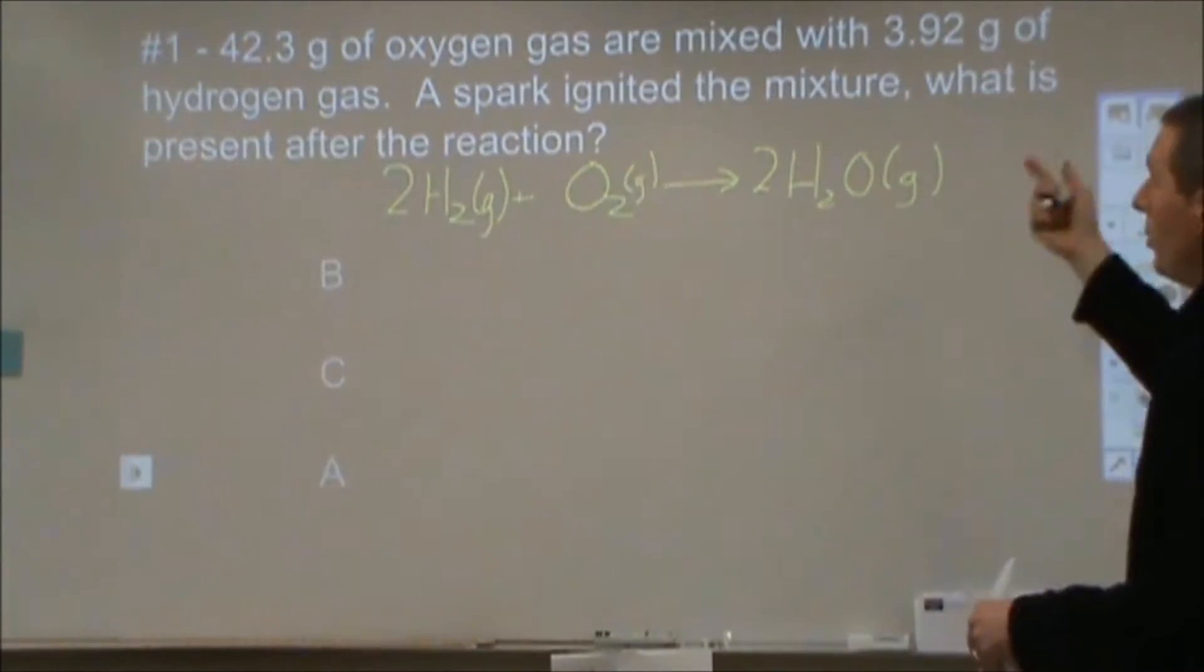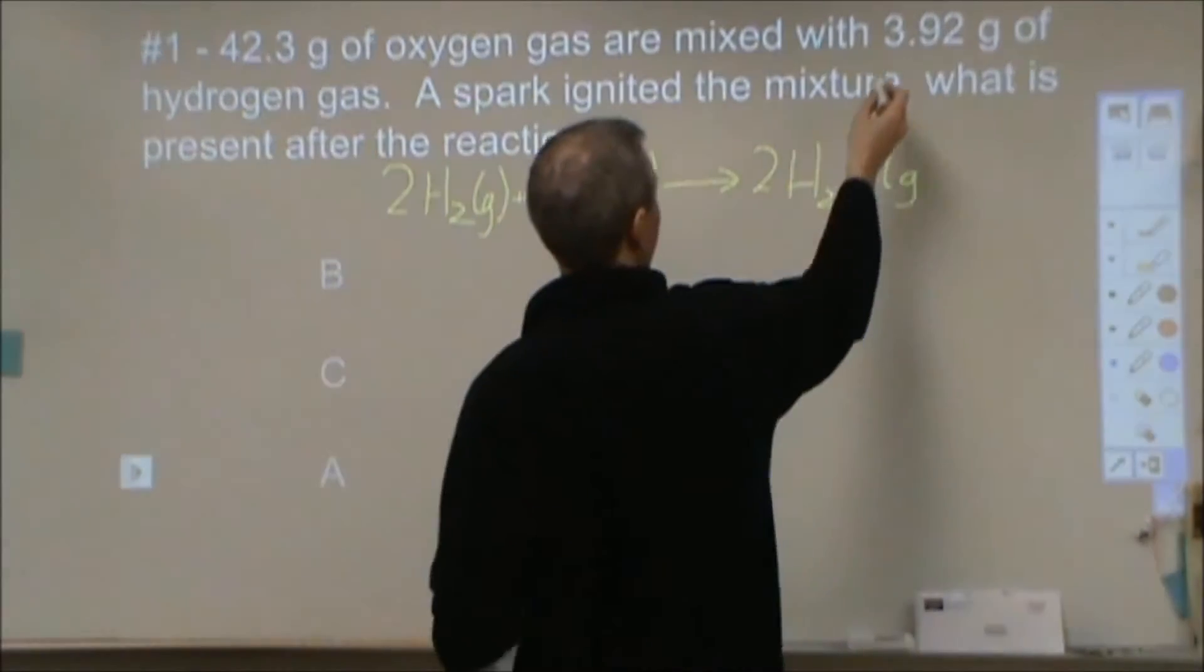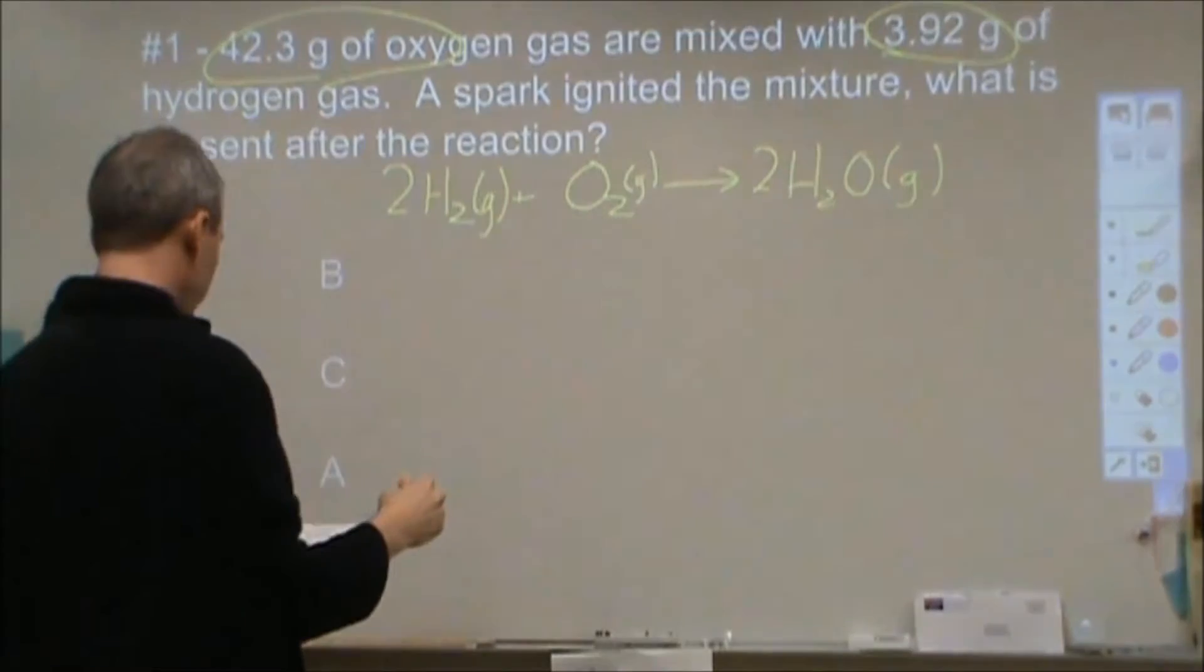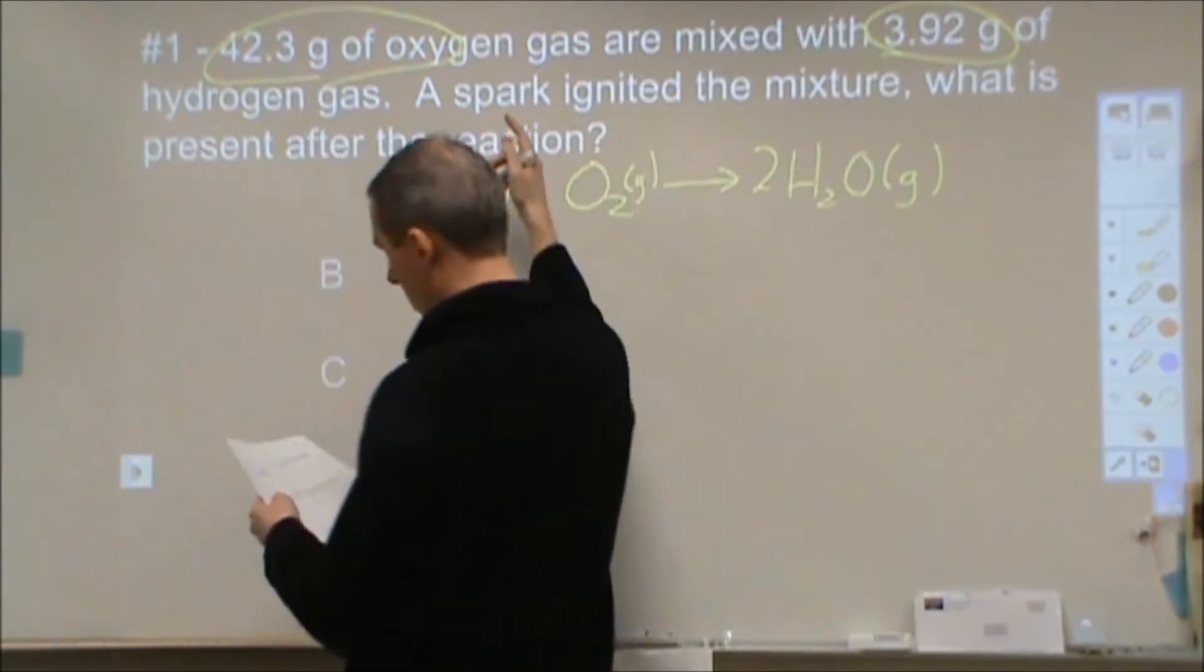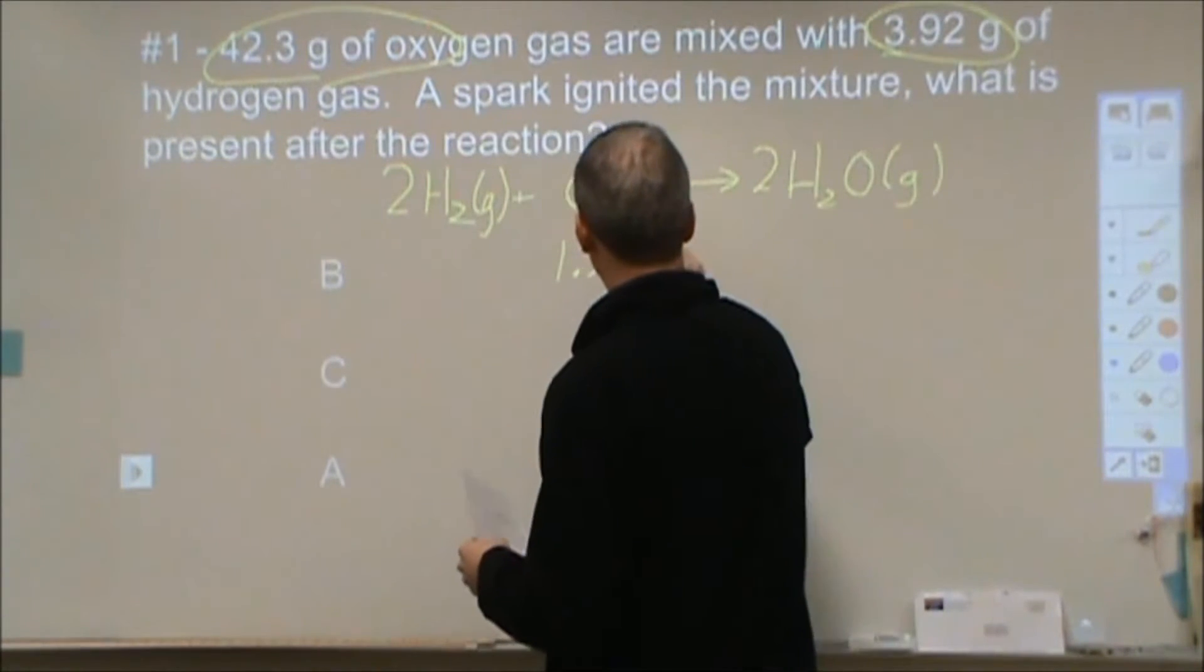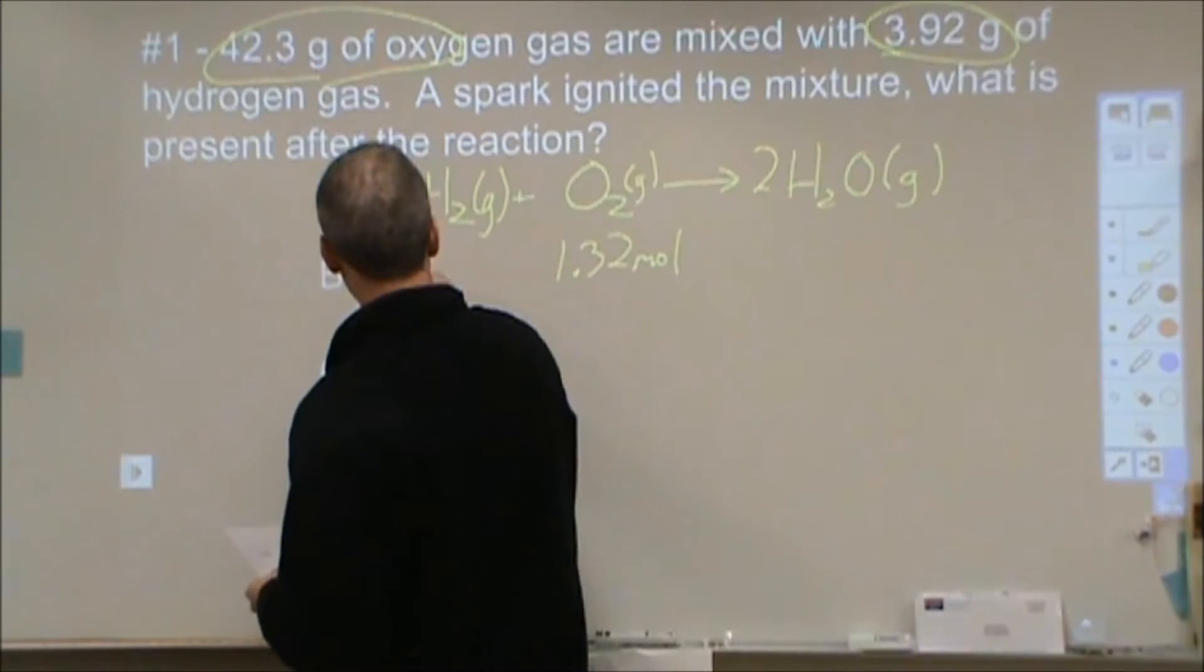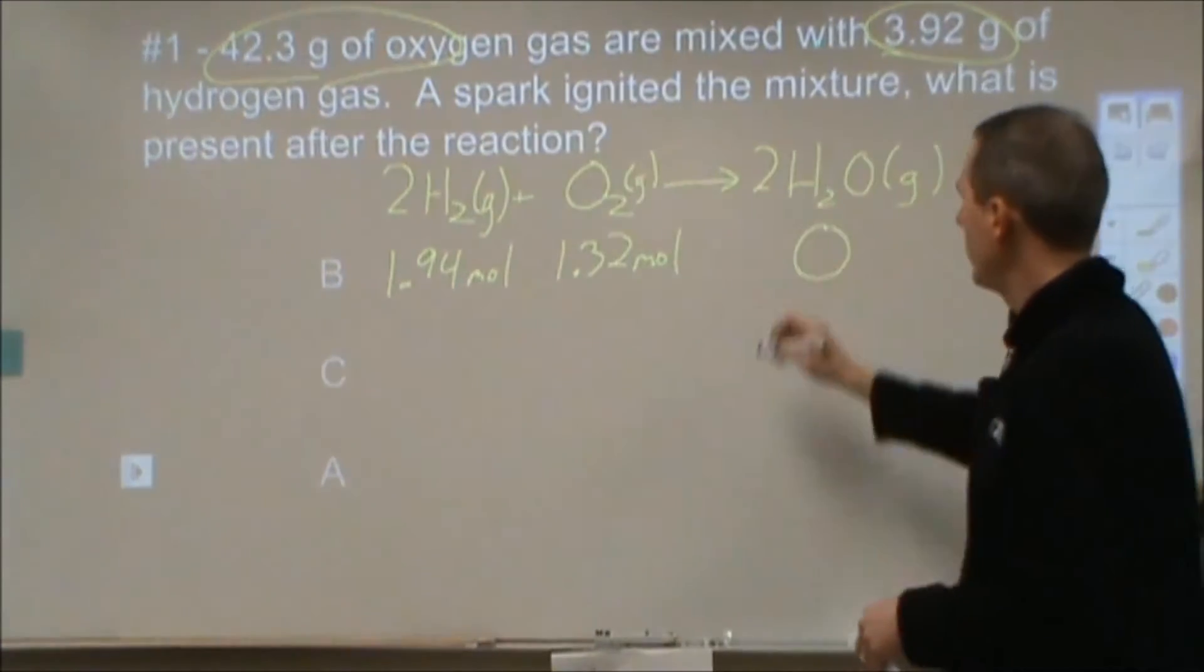So for these, we're given two different amounts. We're given 42.3 grams of oxygen gas and we're given 3.92 grams of hydrogen gas. So the first thing we're going to do is we're going to take those and change those into moles. So 42.3 grams of oxygen gas and oxygen is 32 grams per mole. It comes out to be 1.32 moles of oxygen. And 3.92 grams of hydrogen gas divided by 2.02 gives us 1.94 moles. Starting with zero product, we assume.